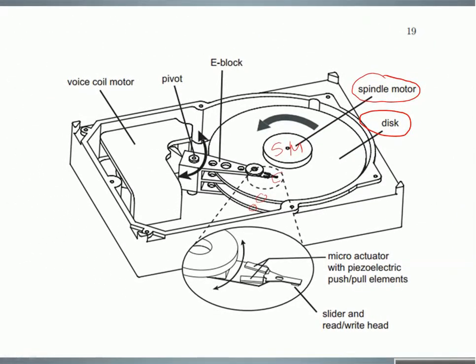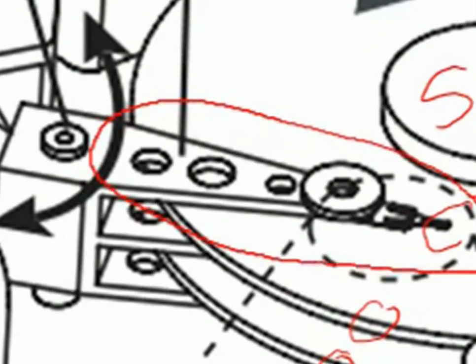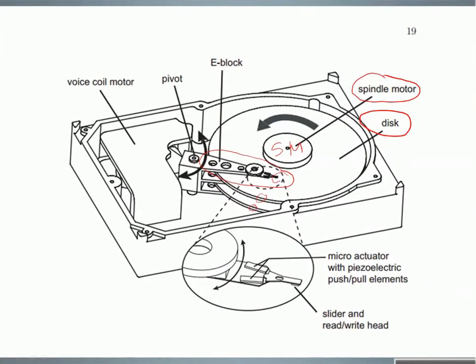The read/write head is mounted on the tip of the arm. Every single platter has an arm with its head, and all the arms are stacked together in the assembly called E-block.